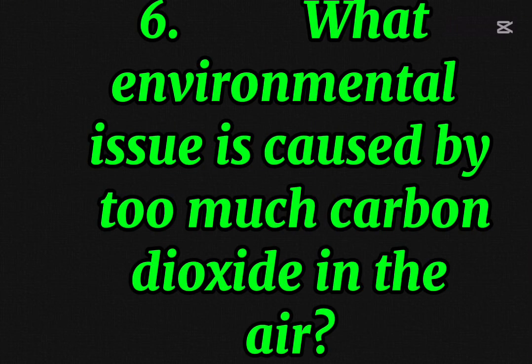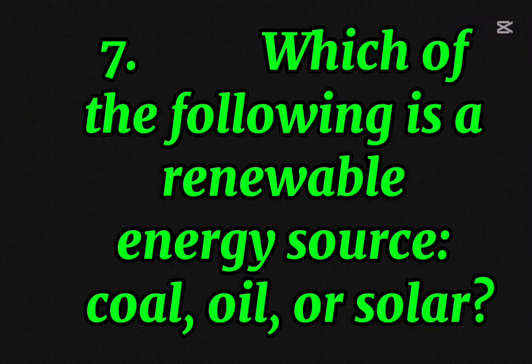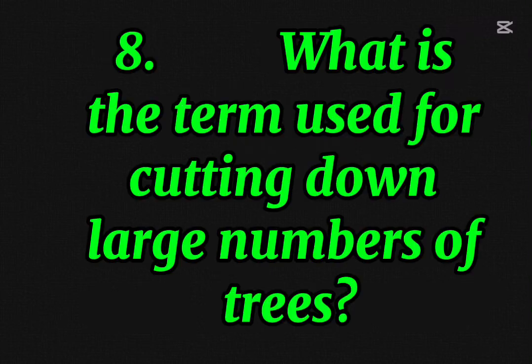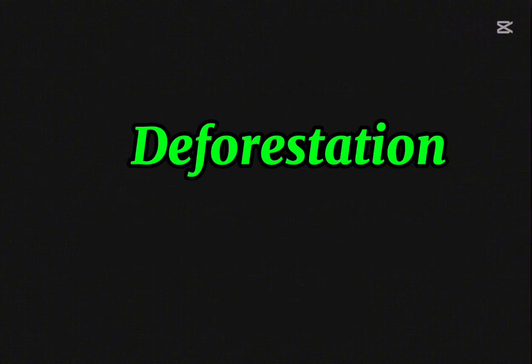Six, what environmental issue is caused by too much carbon dioxide in the air? Climate change or global warming. Seven, which of the following is a renewable energy source — coal, oil, or solar? Solar. Eight, what is the term used for cutting down large numbers of trees? Deforestation.